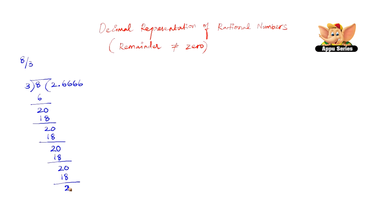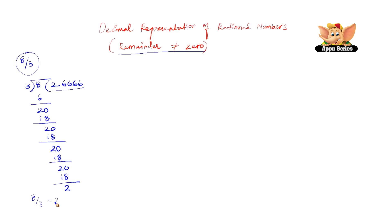We have a fixed remainder here — we are not going to get a remainder of 0. That is what is meant when we say remainder is not equal to 0. We can also say that the decimal form of this rational number is non-terminating or a recurring decimal. So 8 by 3 equals 2.66666... which we write as 2.6 bar, where the bar indicates the digit under it keeps recurring.